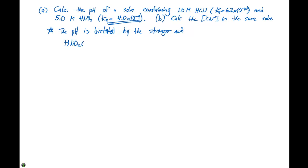Our HNO2 in aqueous solution is going to be in equilibrium with H plus and NO2 minus. A lot of the time we don't include the water, so we just show what's breaking down, writing H plus instead of H3O plus. We'll set up an ICE table: initially, the concentration of HNO2 is 5.0 molar, and both H plus and NO2 minus are zero.